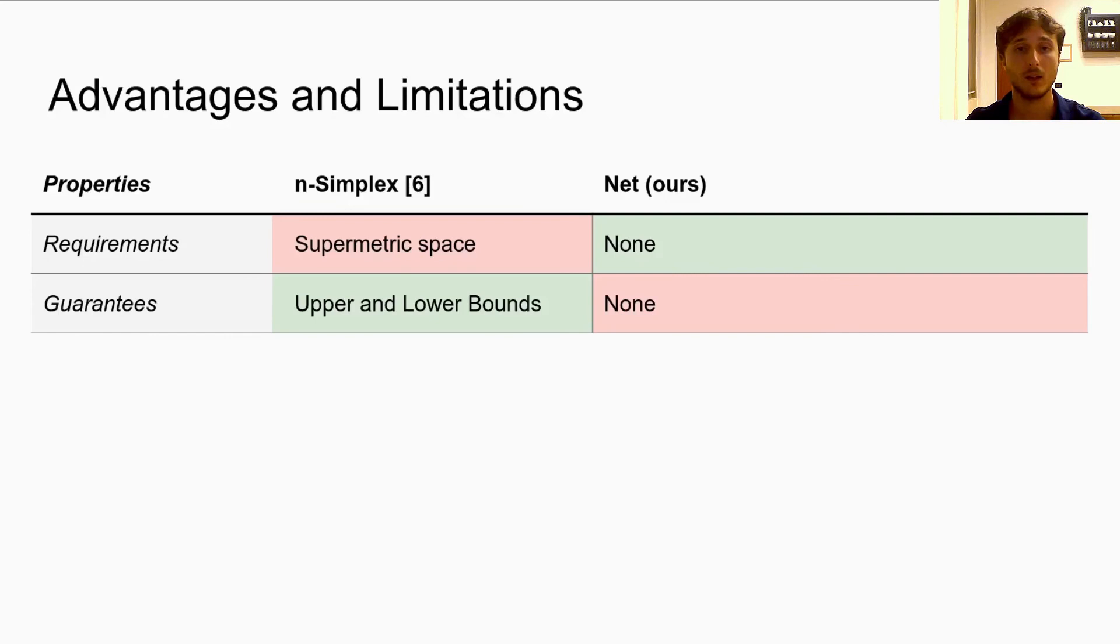On the other hand, the n-simplex provides guarantees and upper and lower bounds to the predicted distance, while our method does not.